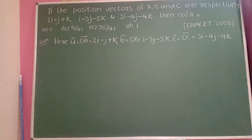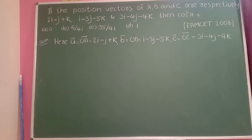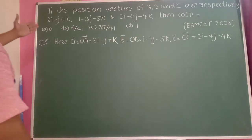If the position vectors of the points A, B and C are respectively 2i minus j plus k, i minus 3j minus 5k, and 3i minus 4j minus 4k, then cos squared A is equal to what? They give the position vectors here.